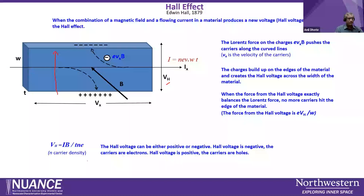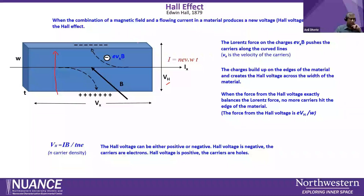The Hall voltage is given as IB over tNe, where N is the carrier density. This Hall voltage can be negative or positive. If it is negative, the carriers are electrons. If it is positive, the carriers are holes.